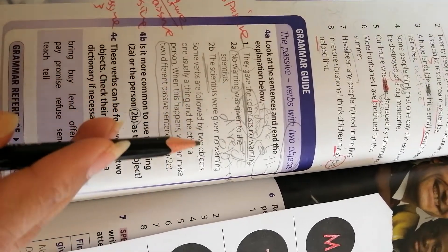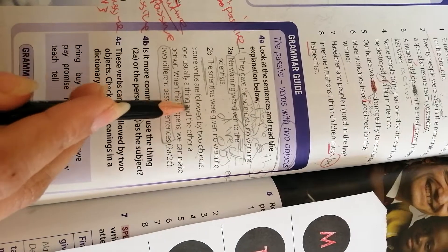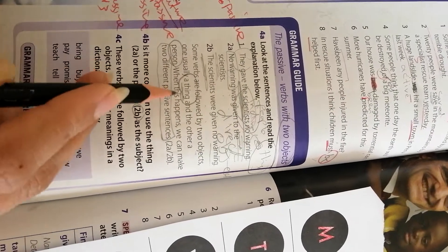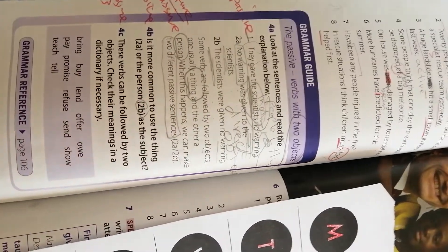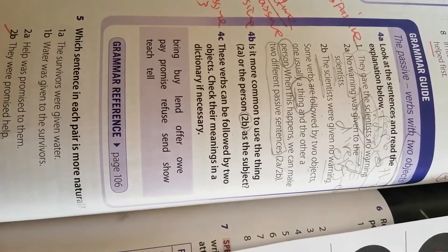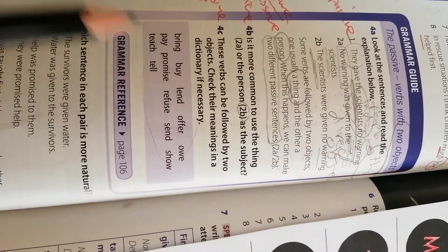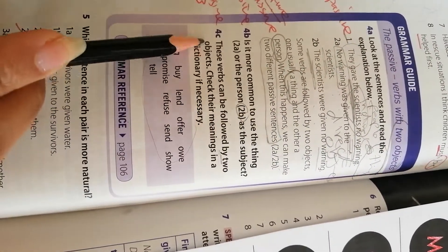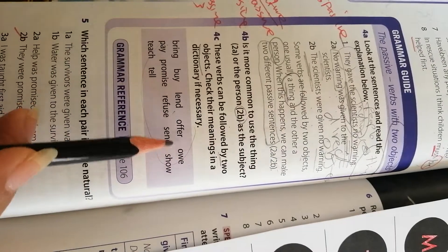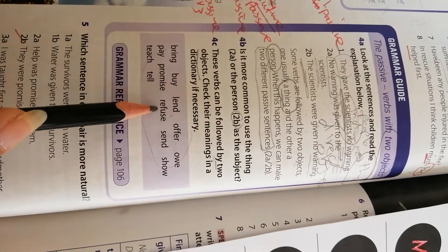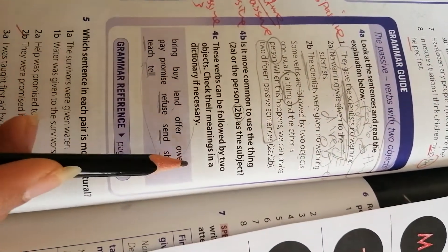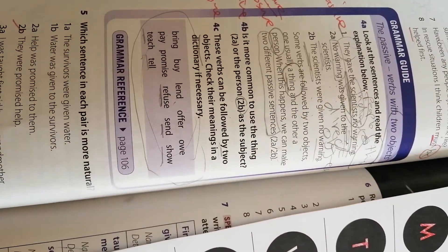Some verbs are followed by two objects. One usually a thing, such as warning, and the other a person. When this happens, we can make two different passive sentences. Not all the verbs in English are followed by two objects. This list of verbs are followed by two objects: bring, buy, lend, offer, owe, pay, promise, refuse, send, show, teach, and tell.